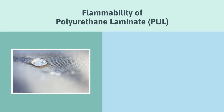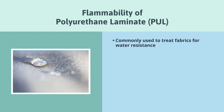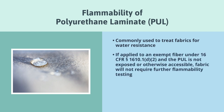Polyurethane laminate, or PUL, is commonly used to treat fabrics for water resistance and is often applied to polyester, which is a fiber exempt from testing under 16 CFR section 1610.1 D2. In scenarios where the PUL is applied to exempt fibers and is not exposed or otherwise accessible, the fabric will not require any further flammability testing.